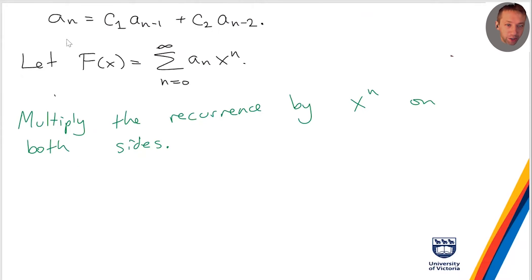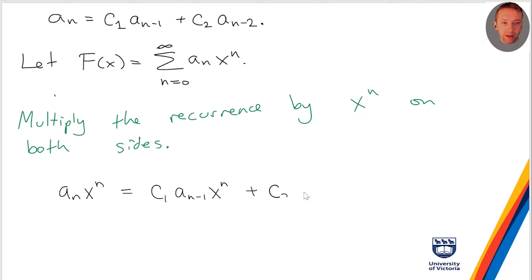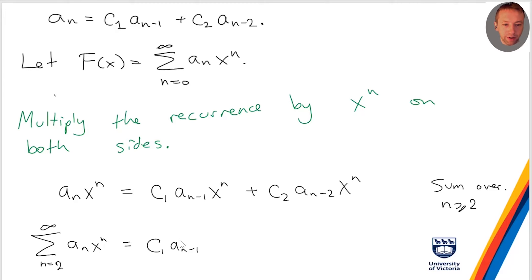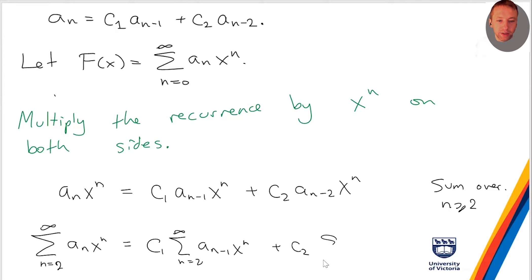Let's do our usual step: write down the recurrence and multiply both sides by x to the n — this is what we've been doing. So we write a_n x^n equals c1 · a_{n-1} x^n plus c2 · a_{n-2} x^n, and then we sum over all valid values, which is all n at least 2. So we get: sum from n=2 to infinity of a_n x^n equals c1 times sum of a_{n-1} x^n, plus c2 times sum of a_{n-2} x^n.